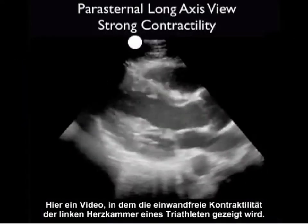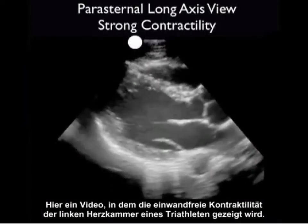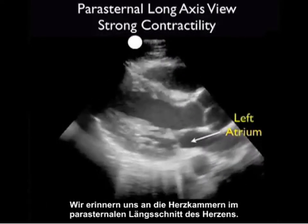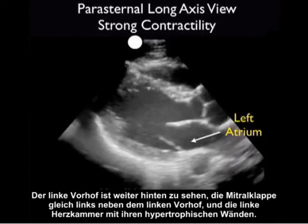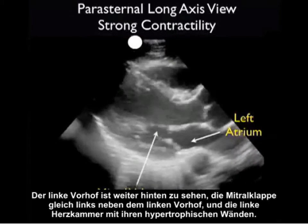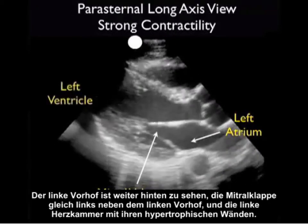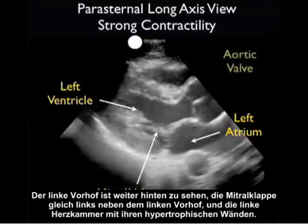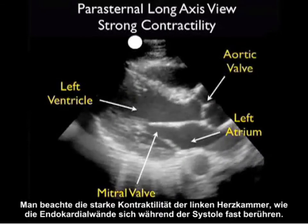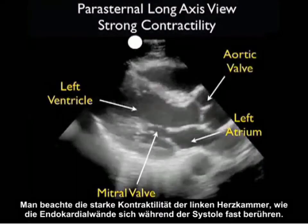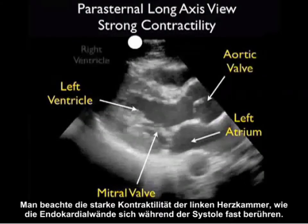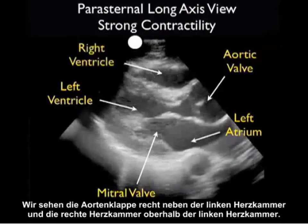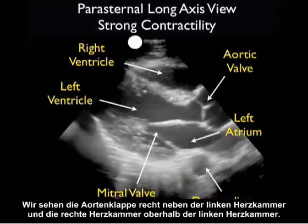Here's a video clip showing excellent contractility of the left ventricle, taken from a medical student triathlete. Recall the chambers of the heart as seen from the Parasternal Long Axis plane: the left atrium in a posterior location, the mitral valve just to the left of the left atrium, and the left ventricle with its hypertrophic walls. Notice the strong contractility of this left ventricle as the endocardial walls almost meet during systole. We also see the aortic valve to the right of the left ventricle, and the right ventricle in a superficial location above the left ventricle.